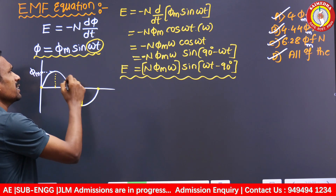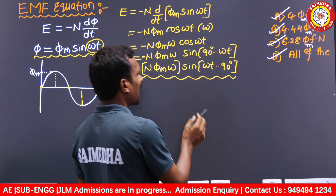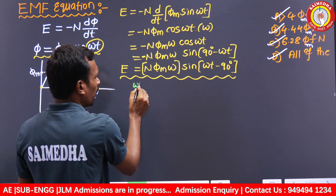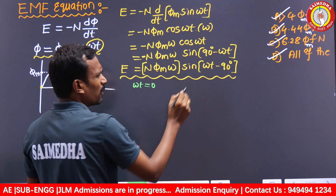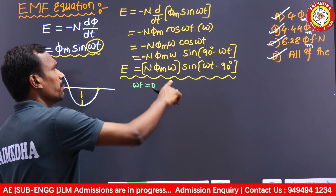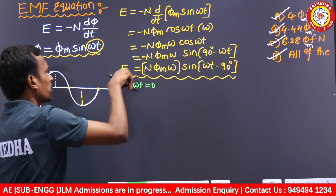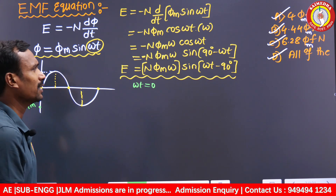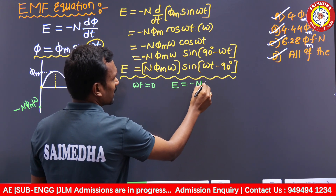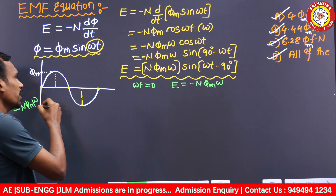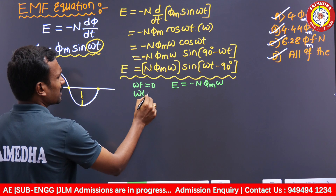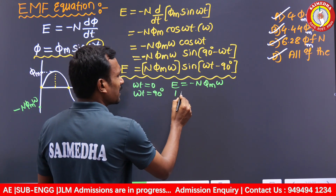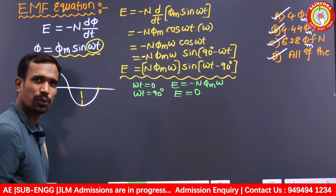Now applying the EMF equation at various angles: when ωt = 0°, sin(0° − 90°) = sin(−90°) = −1, so E = −N × Φ_M × ω (negative maximum). When ωt = 90°, sin(90° − 90°) = sin(0°) = 0, so E = 0.